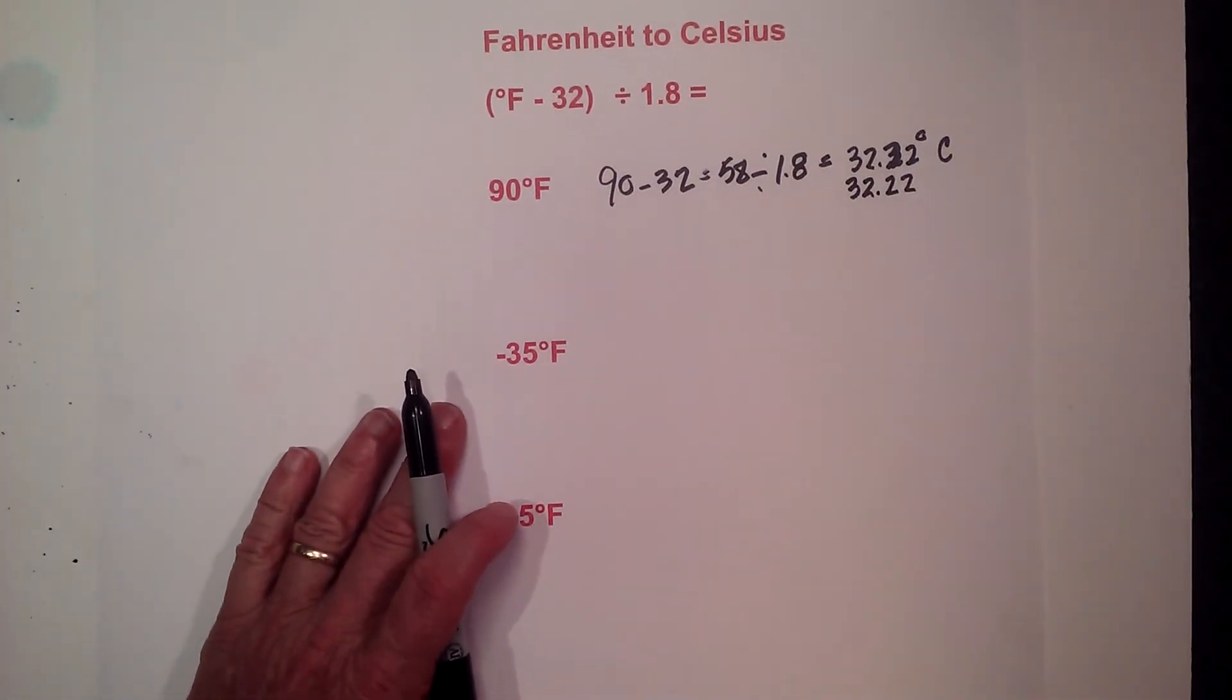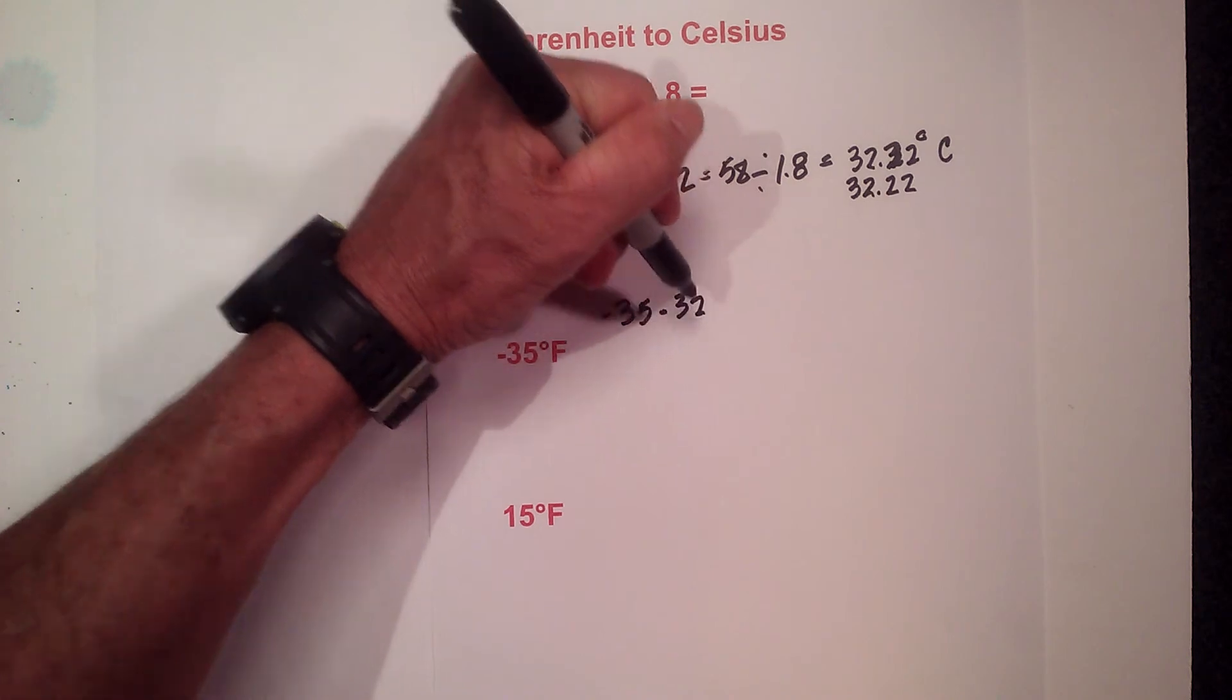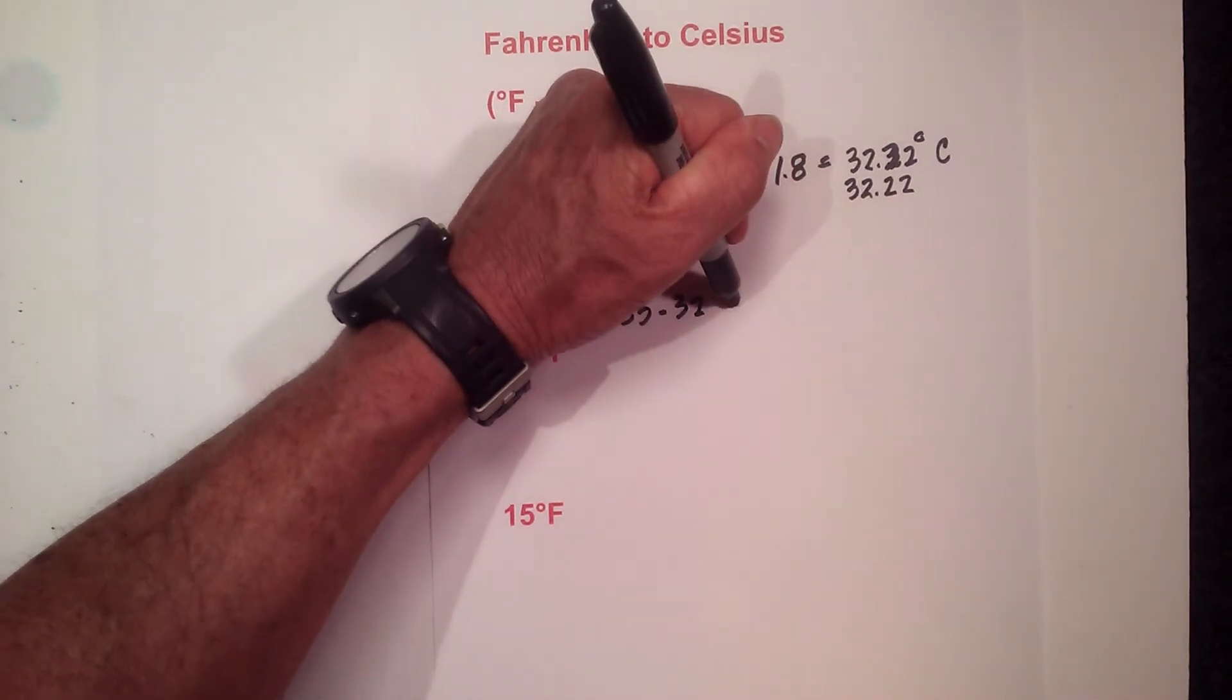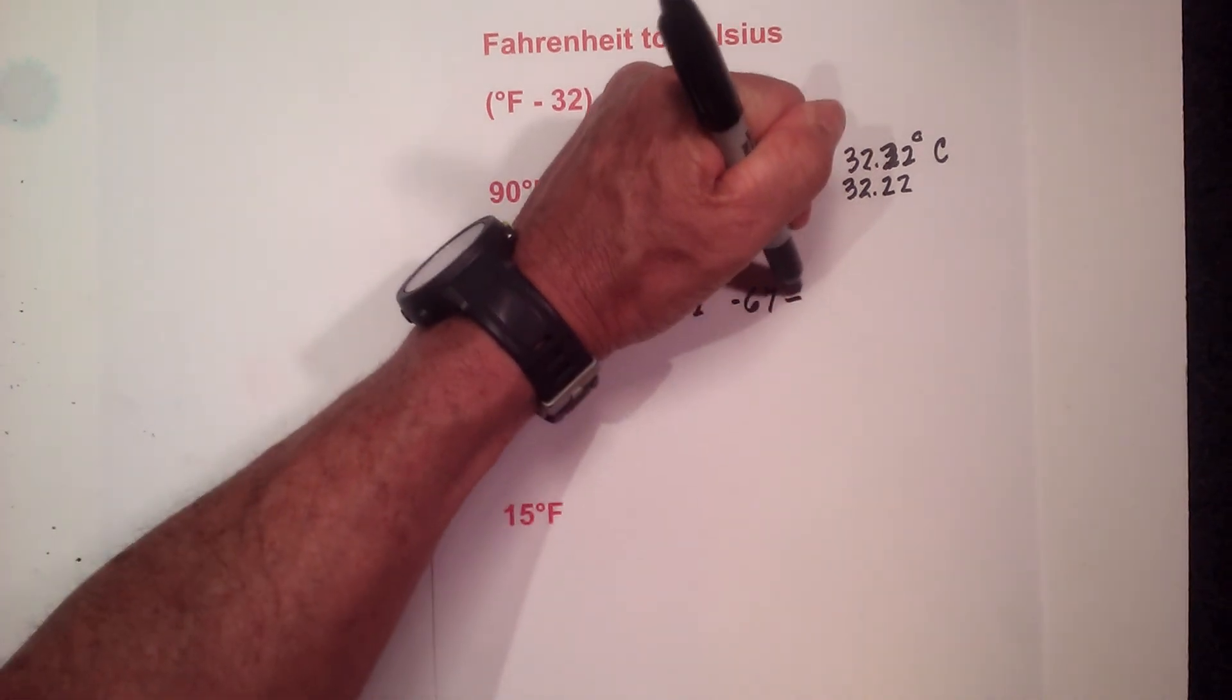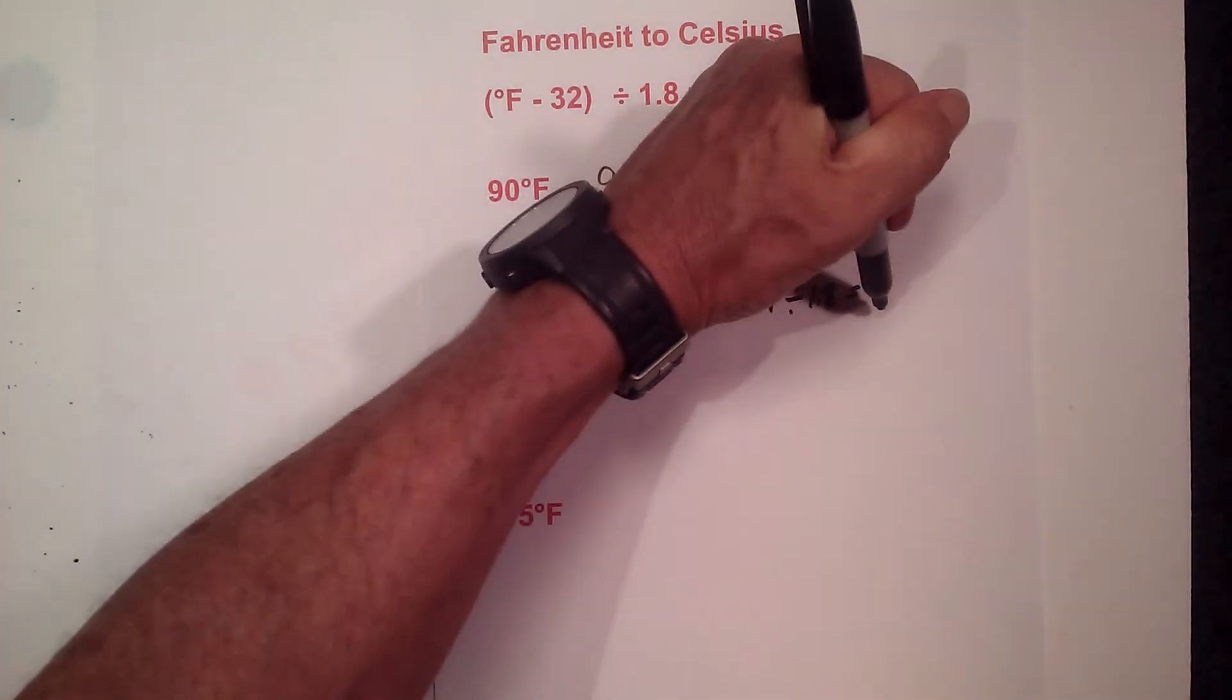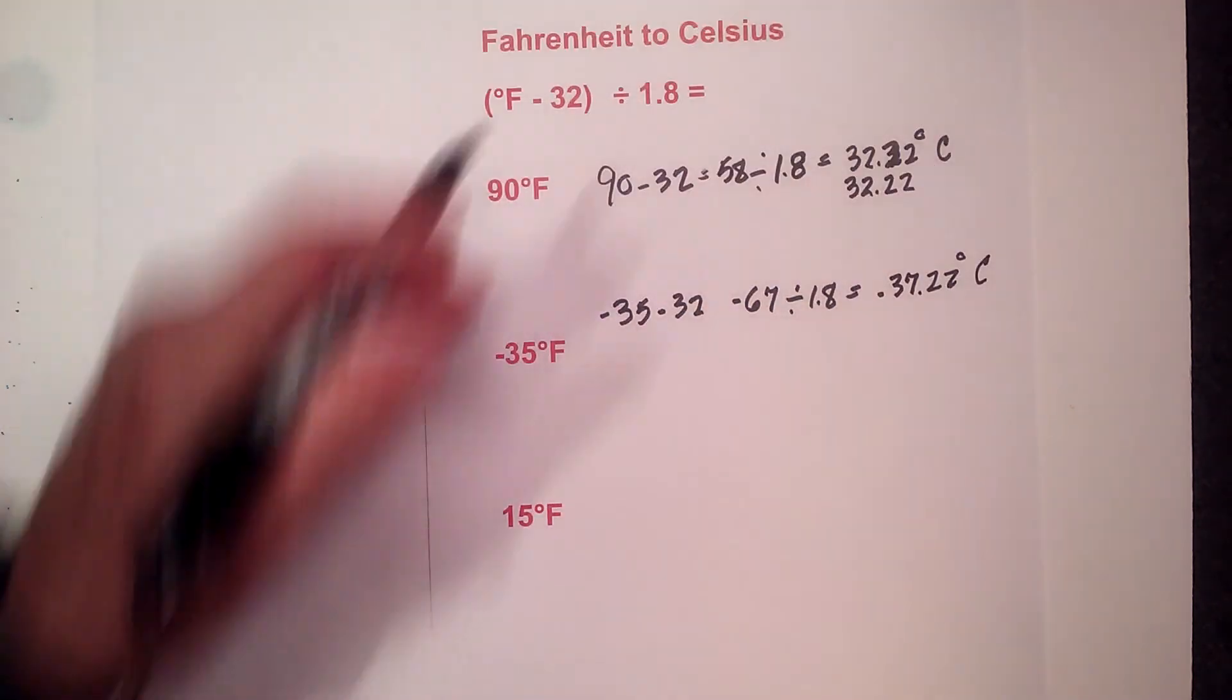Okay how about a negative number? Well let's look at it. You have minus 35, minus 35 minus 32, which remember they're the same signs so we are going to add them. So that is going to equal minus 67. Negative 67 divided by 1.8 is now going to equal negative 37.22 degrees Celsius.